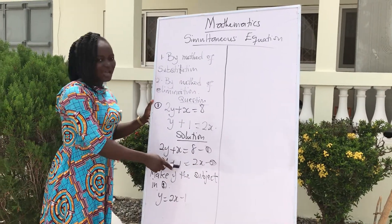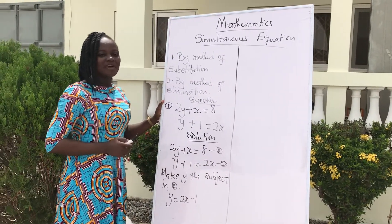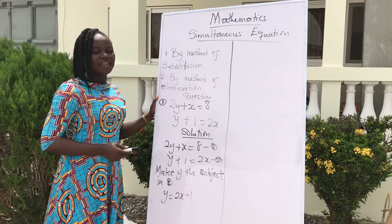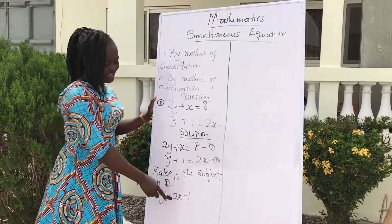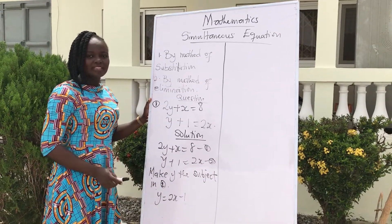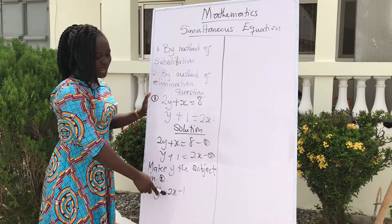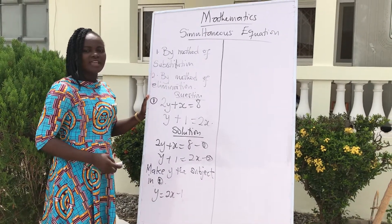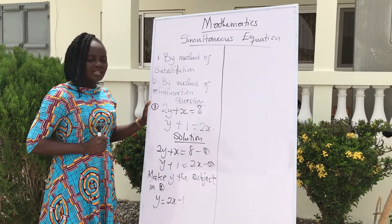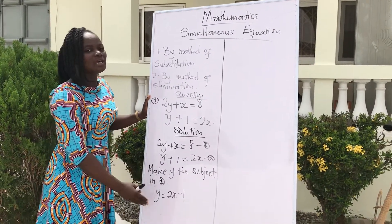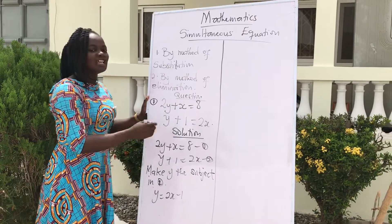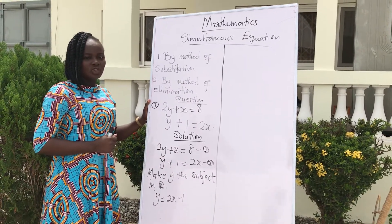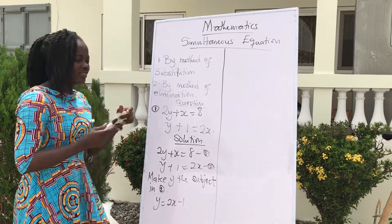So it becomes y equals 2x minus 1. The 1 here was positive, so when it crosses the equals sign, it becomes negative. So making y the subject, we get y equals 2x minus 1. When you finish, substitute it into the first equation.